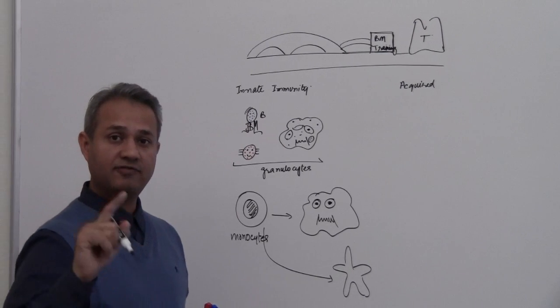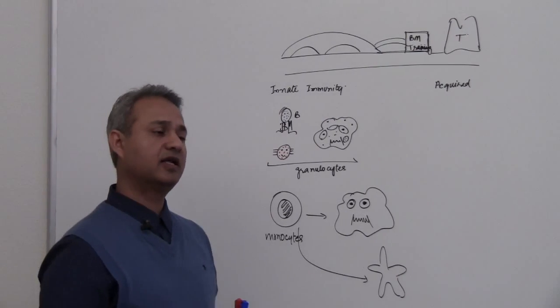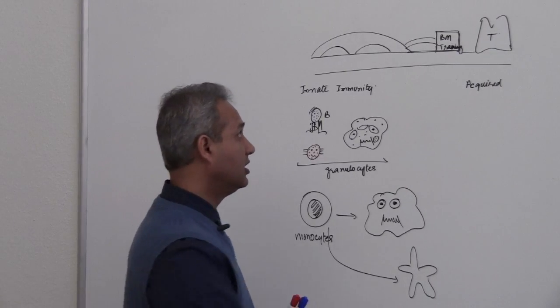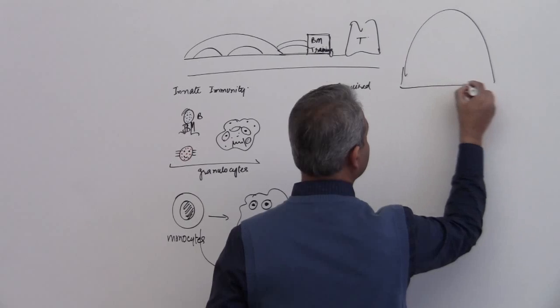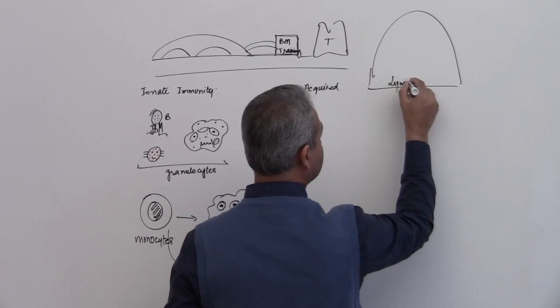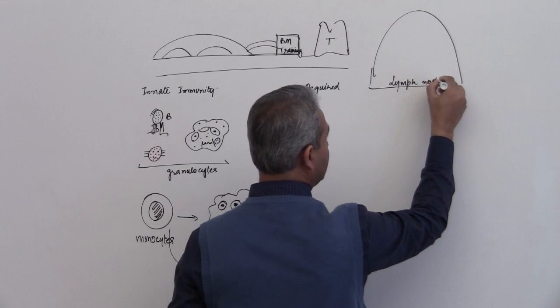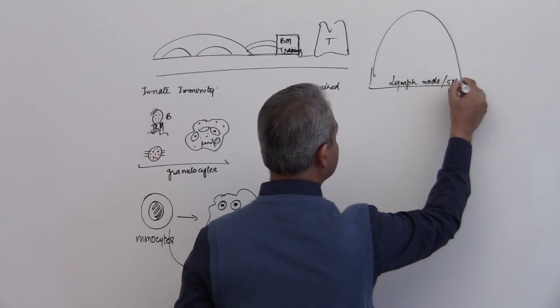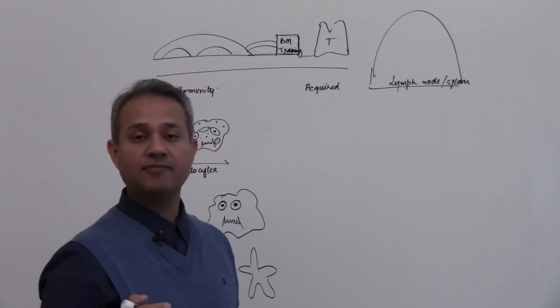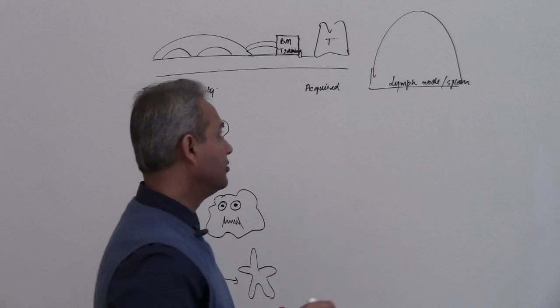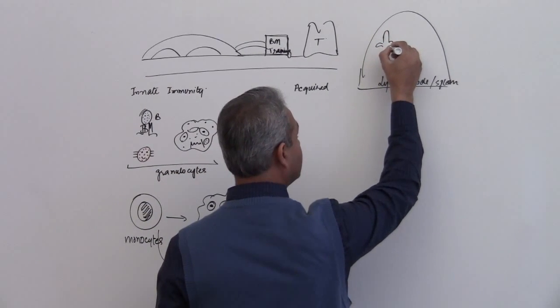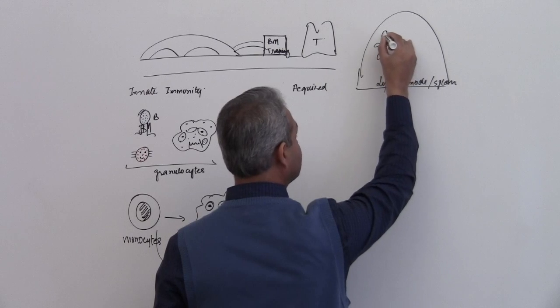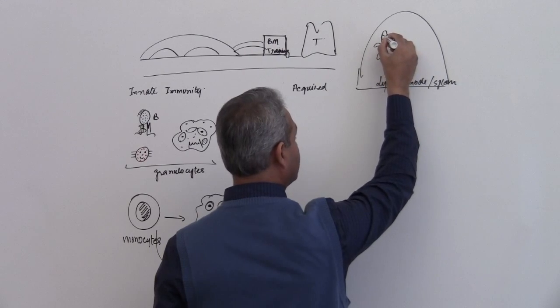Now please remember this, we have talked in the lecture number one and I think even in lecture number two that in the lymph node, lymph node or spleen, or frankly any lymphoid tissue, we also find dendritic cells there. Remember we talked about it. You cannot forget these guys. These are really very important guys.